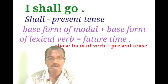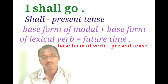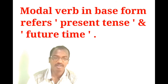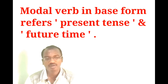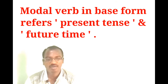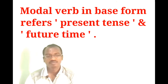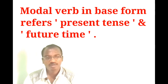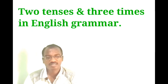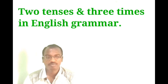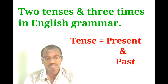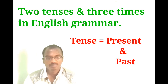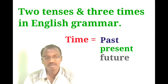Grammar says: all base forms of verbs refer to present tense. 'Will', 'shall', 'can' — these all refer to present tense. But the time they refer to is future time. So we understand this distinction: there are two types of tense in English — present tense and past tense — and three types of time in English — past time, present time, and future time.